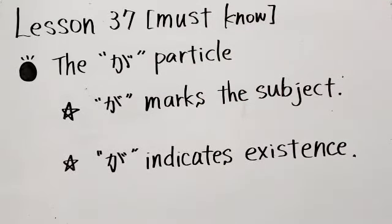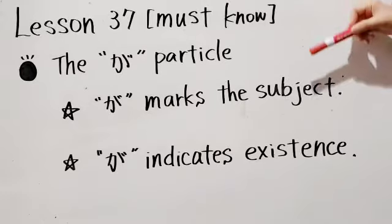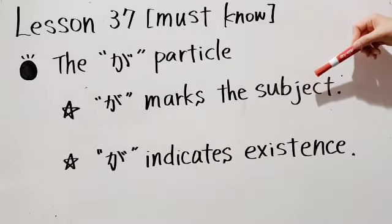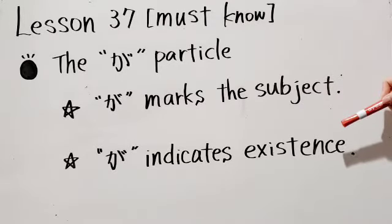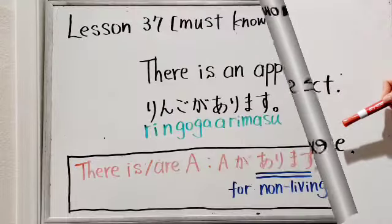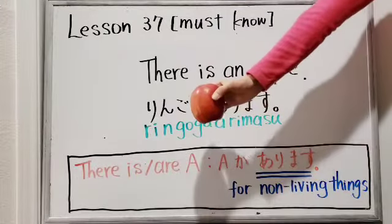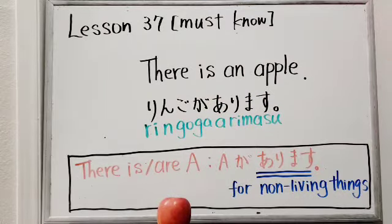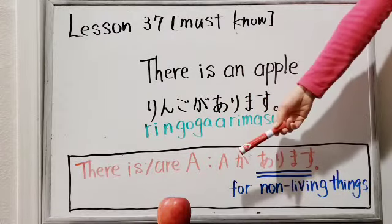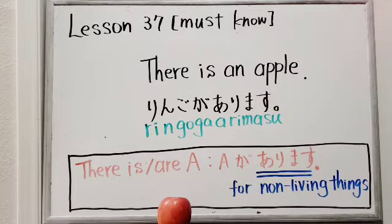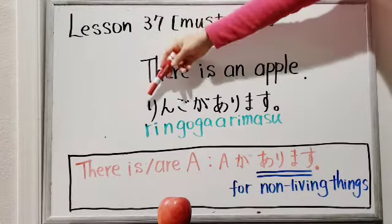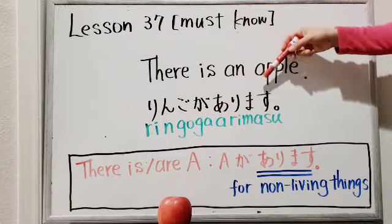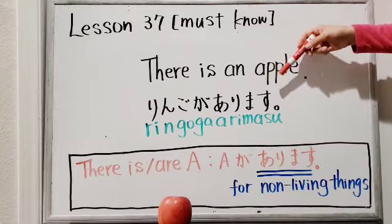Let's learn the first function. が can be used to mark the subject of the sentence. It indicates existence. Please take a look at this apple. In English, you can say, 'There is an apple.' In Japanese, you can say, リンゴがあります。